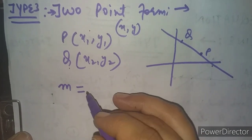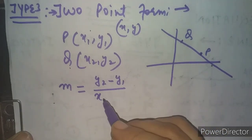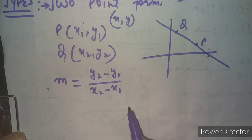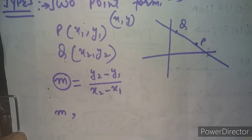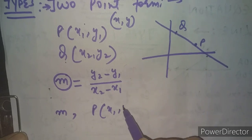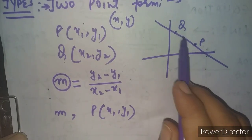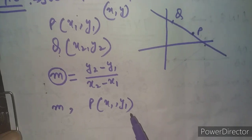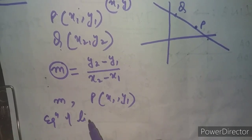Whenever two points with coordinates are given, we use them to find the slope of the line using the formula: slope m = difference of ordinates divided by difference of abscissas. Once m is known, we now have the slope of that line. Out of the two points, we can use either point — let's use point P with coordinates x₁, y₁. Depending on the question, you can also use point Q; the answer will always remain the same since both points lie on the same line.